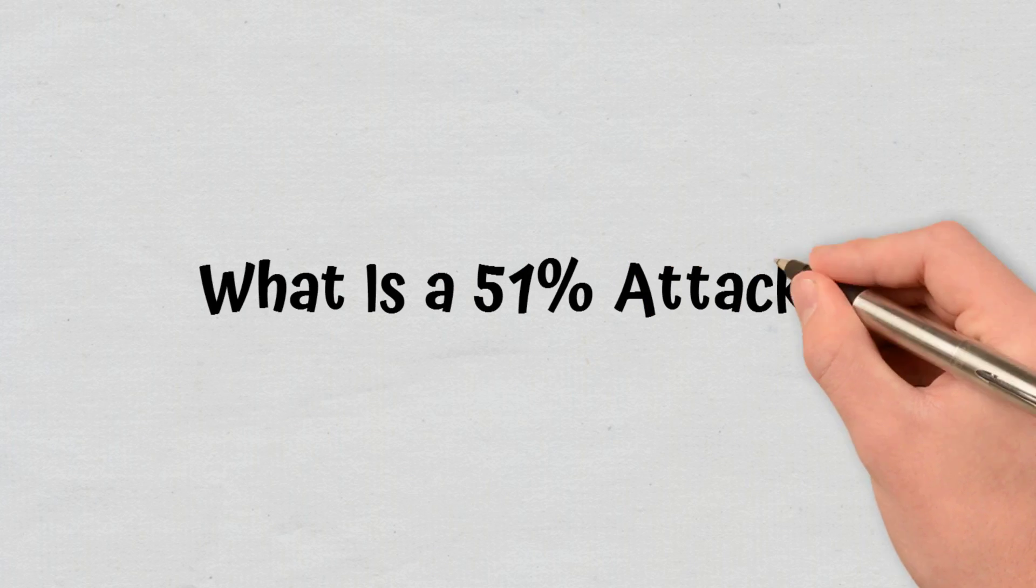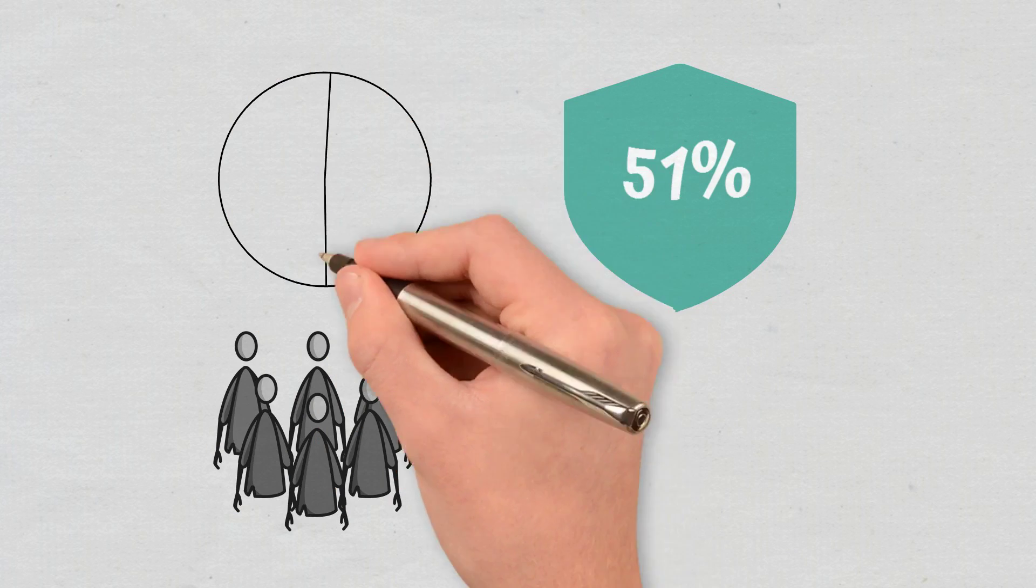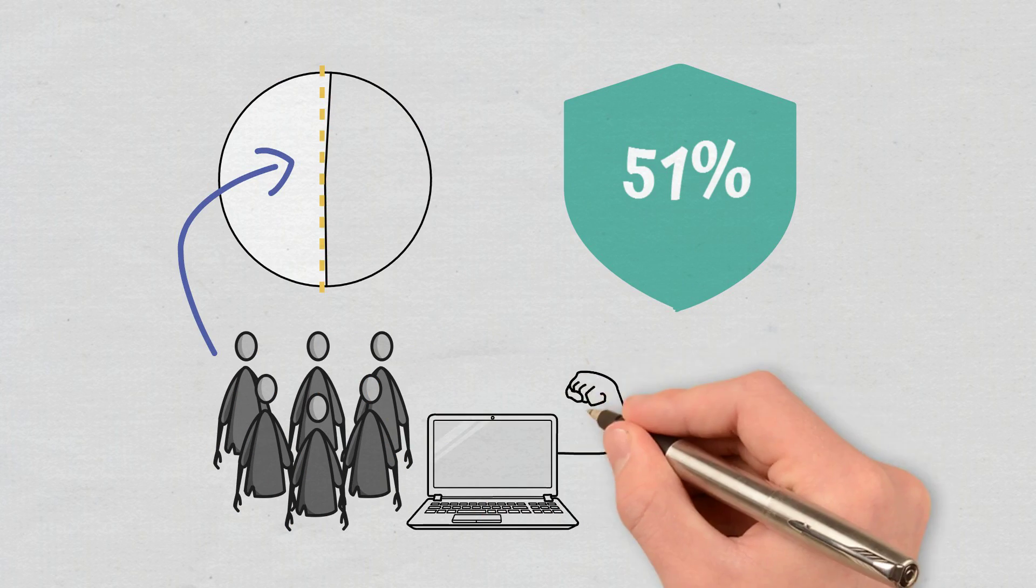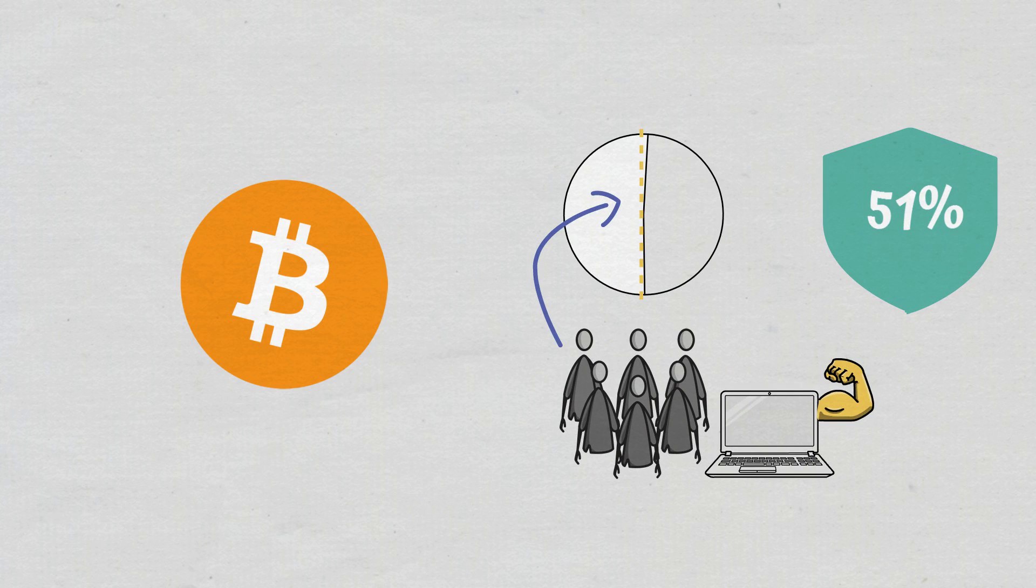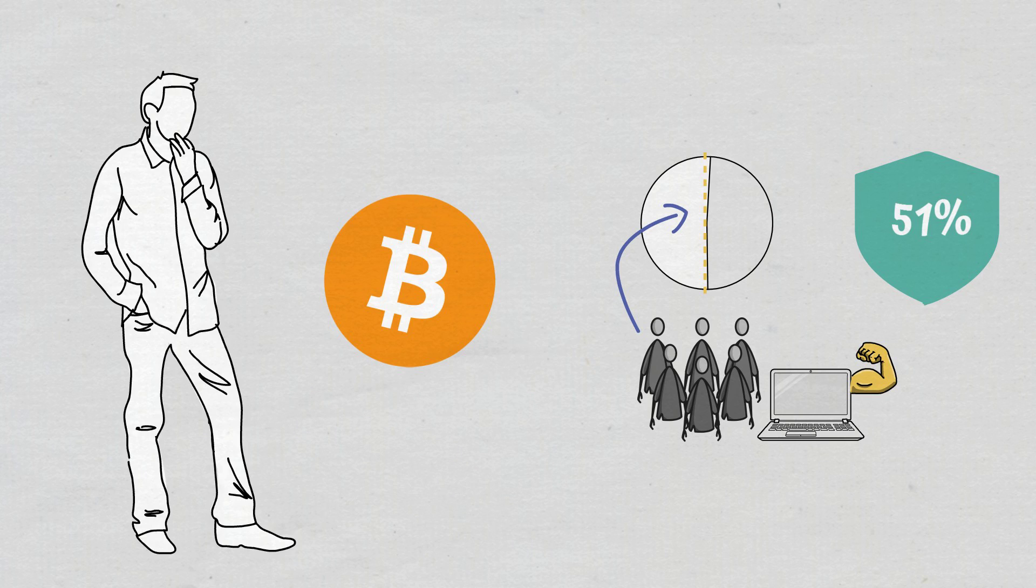What is a 51% attack? A 51% attack refers to an attack on a blockchain in which a group of miners gets to control over 50% of the network's mining hash rate or computing power. It's usually used in relation to the Bitcoin network where such an attack would be possible, at least in theory.